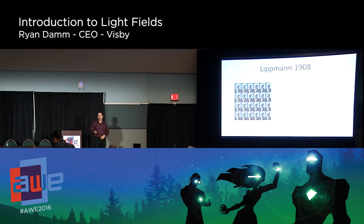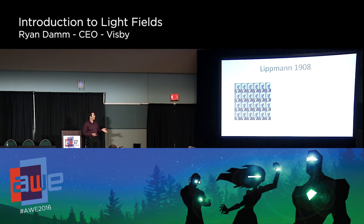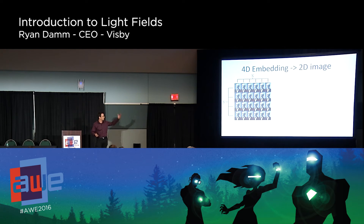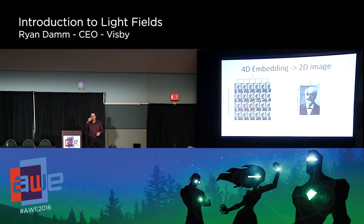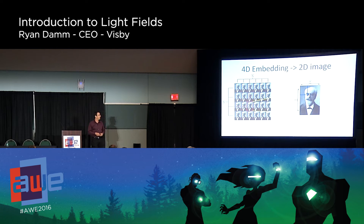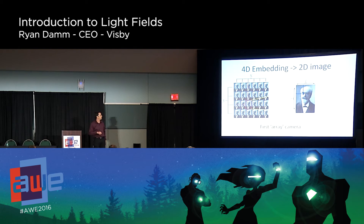The more powerful idea here is that it was sort of like a modern microlens array. The key concept is taking this four-dimensional light field and embedding it in a two-dimensional image. You can see this sort of grid of images — two dimensions dictating which position you're in (which microlens is creating the image), and within that, the individual image has two dimensions that dictate the ray direction that came in. That's exactly how microlenses work — they fold this four-dimensional light field onto a two-dimensional raster.